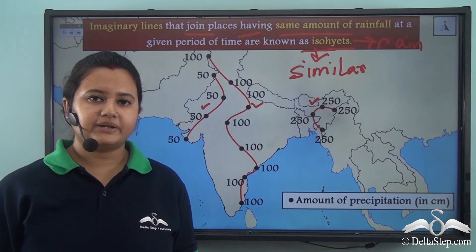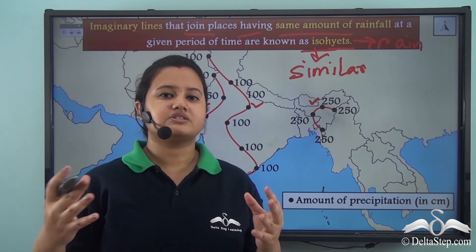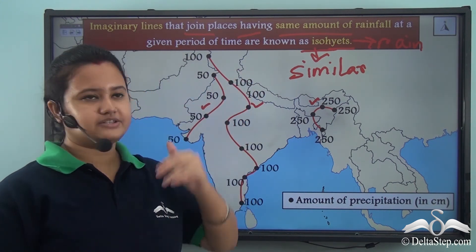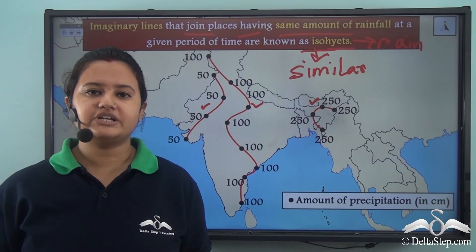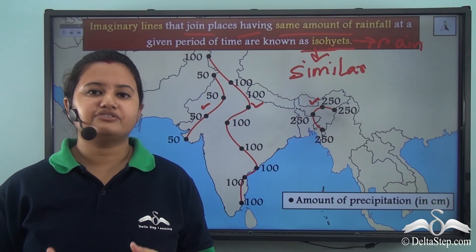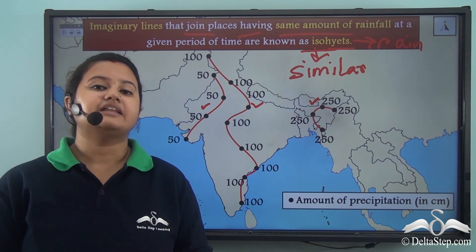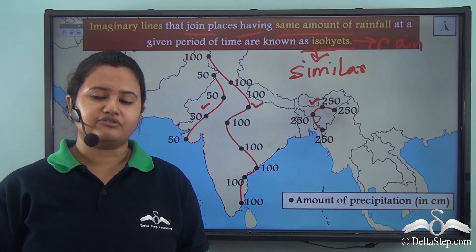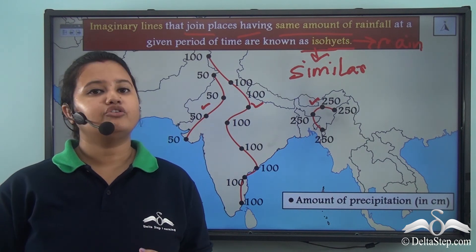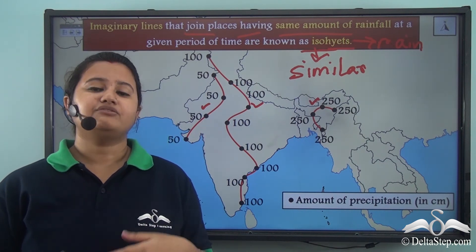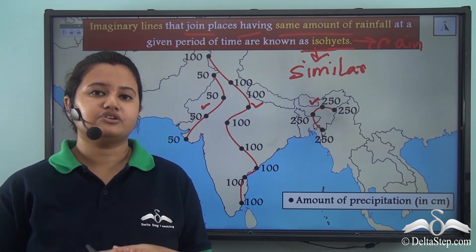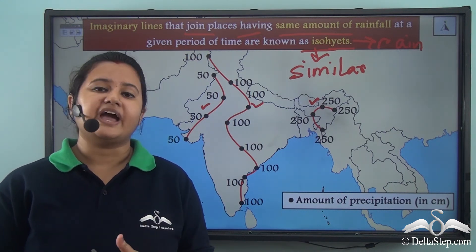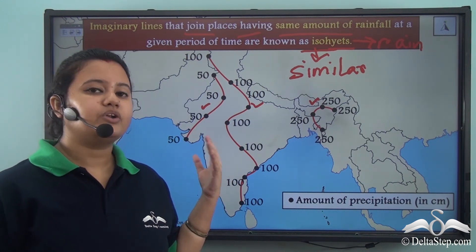In today's video we first discussed different types of rainfall: orographic rainfall, convectional rainfall, and cyclonic or frontal rainfall. Then we understood how to measure rainfall using a rain gauge. Finally, we studied about isohyets — imaginary lines connecting places that receive the same amount of rainfall.